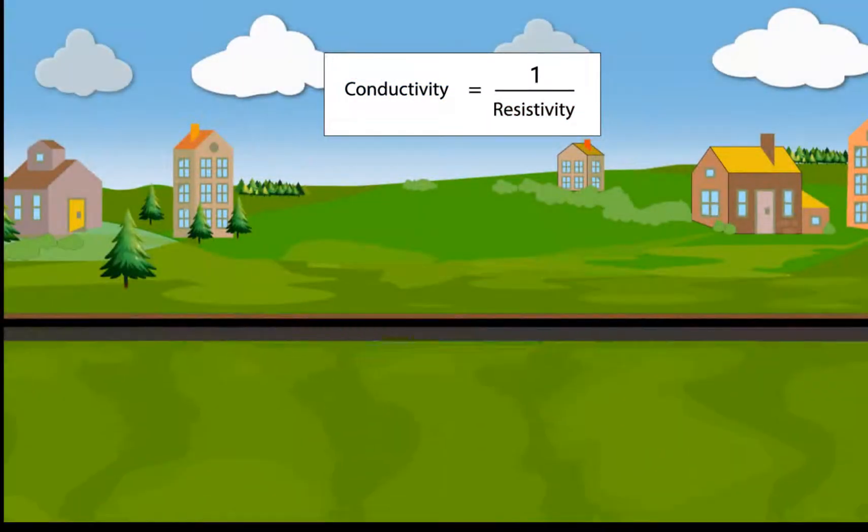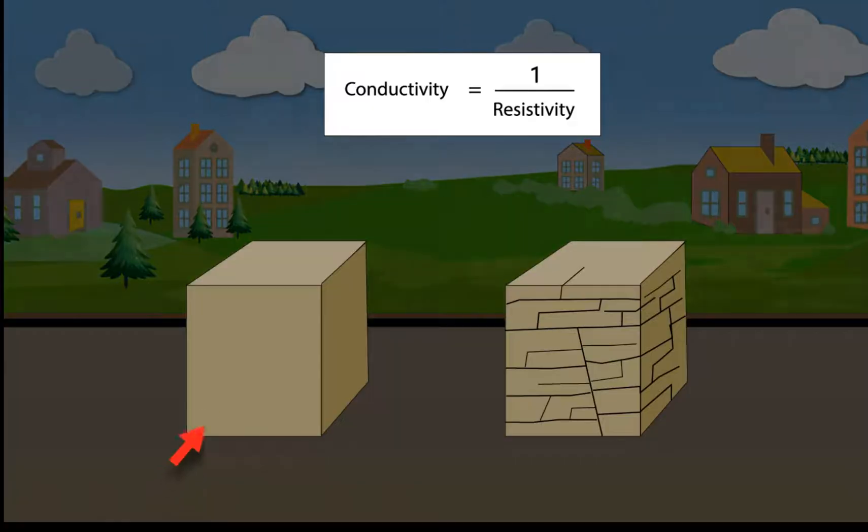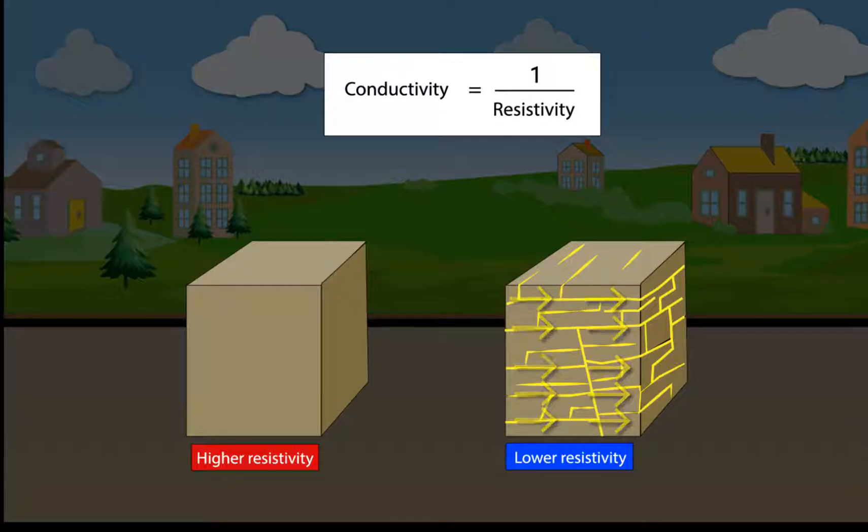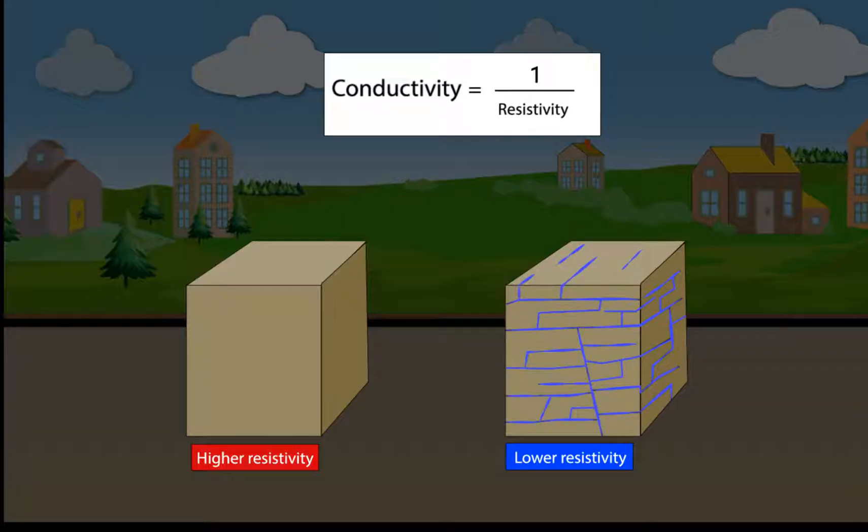Beneath the surface of the Earth, some rock units are intact while others are riddled with cracks or fractures. And these fractures can be filled with water. Electrical current flows more easily through the water-filled fractures than through the rock. The more fractures a zone of rock has, the higher the conductivity and the lower the resistivity of that zone.